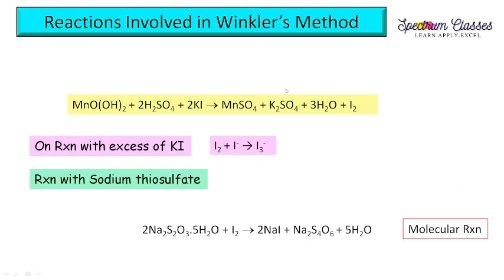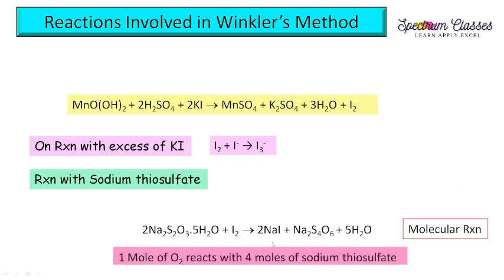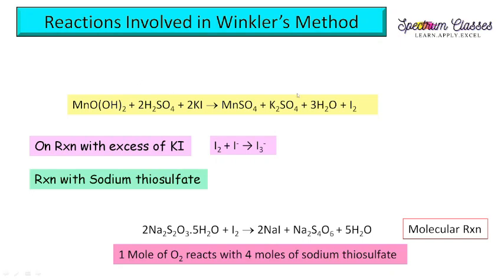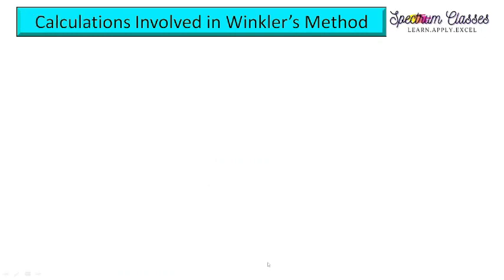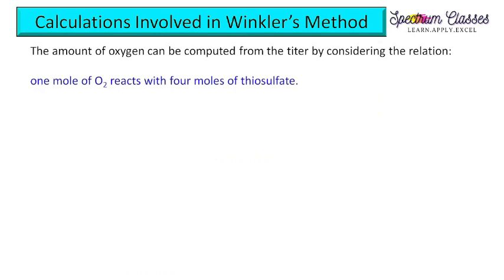As established earlier, 1 mole of oxygen produces 2 moles of iodine. And here 1 mole of iodine requires 2 moles of sodium thiosulfate. Therefore, 1 mole of oxygen requires 4 moles of sodium thiosulfate. This is the important stoichiometric relationship derived from these reactions, and it is what we will use in the calculation part.